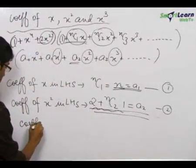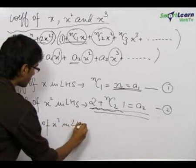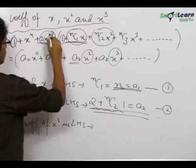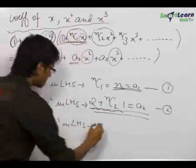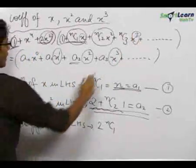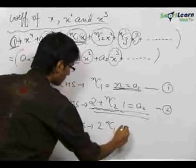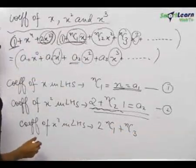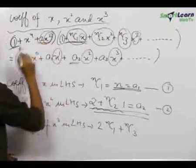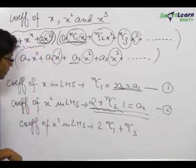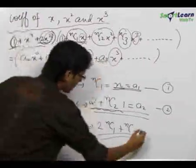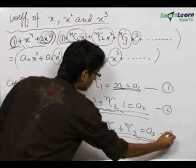The coefficient of x³ in the LHS: when 2x² is multiplied by nc1·x, we get x³ with coefficient 2·nc1. Also, when the nc3·x³ term is multiplied by 1, we get another contribution of nc3. There is no further coefficient of x³ since x² cannot generate x³ without an x term in that bracket. So the coefficient of x³ in LHS is 2nc1 + nc3. Comparing with RHS: 2n + nc3 = a3. This is the third equation.